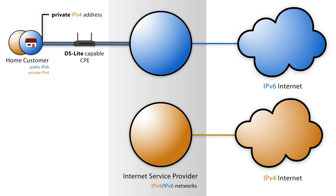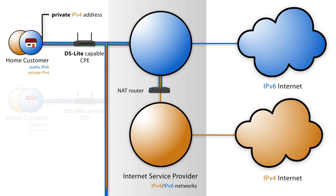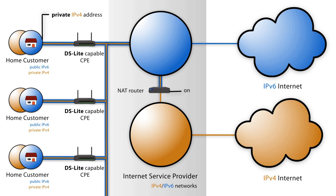Because customers are given private IPv4 addresses that are non-routable on the Internet, the ISP must do network address translation on behalf of the customer. One issue when using NAT is the fact that the provider keeps several customers behind one public IPv4 address.